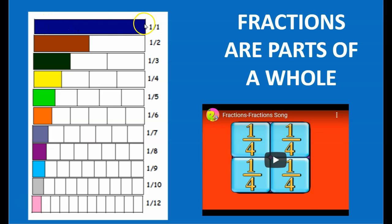So when I have one whole, and this is what each fraction would look like. This would be a half, a third, one fourth, one fifth, one sixth.